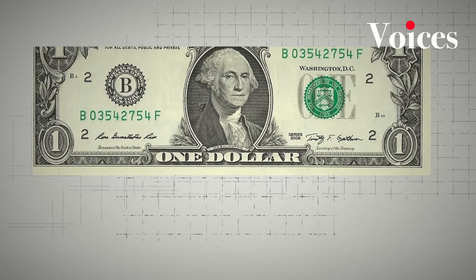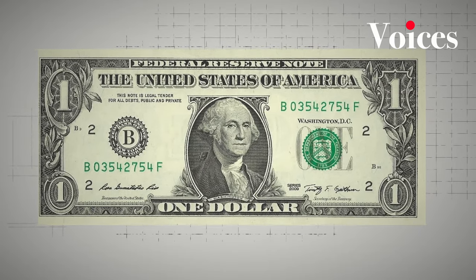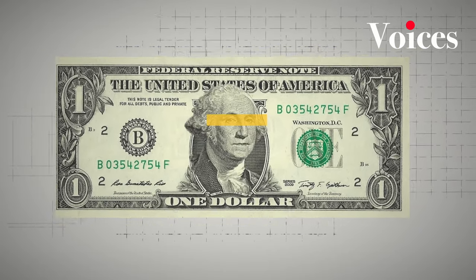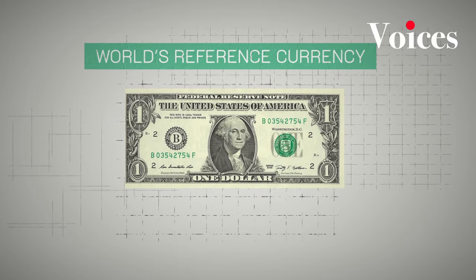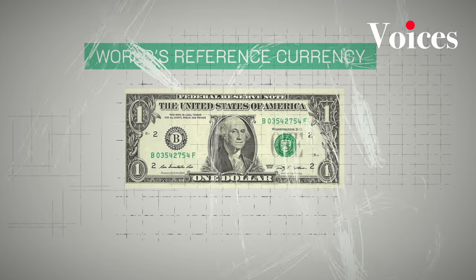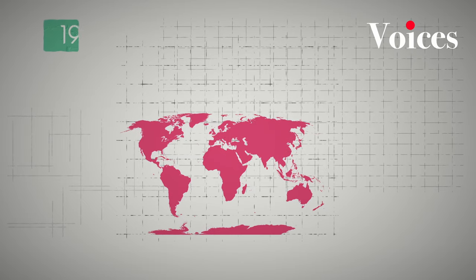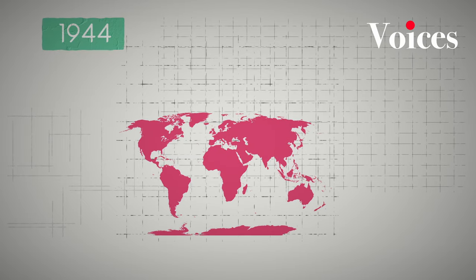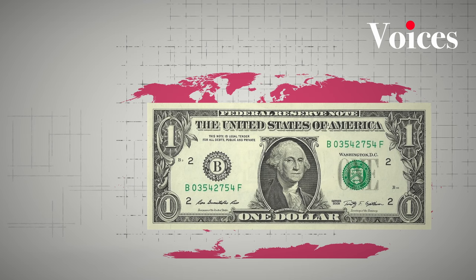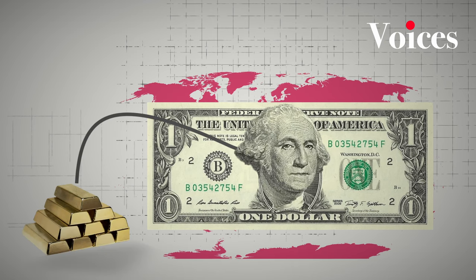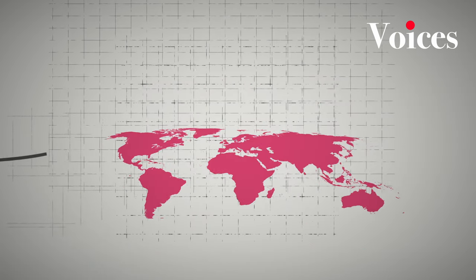The United States dollar, a currency synonymous with power and influence in the global economy. But how did it become the world's reference currency? It all started with the Bretton Woods Agreement of 1944, where nations agreed to peg the value of their currencies to the U.S. dollar, which was backed by gold. This gave the dollar unparalleled strength and influence.